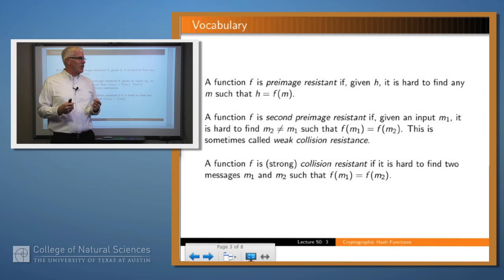Let's introduce some vocabulary. We say that a function, this is a hash function, f is pre-image resistant, if given a particular hash value, it's difficult to find a message which hashes to that value.